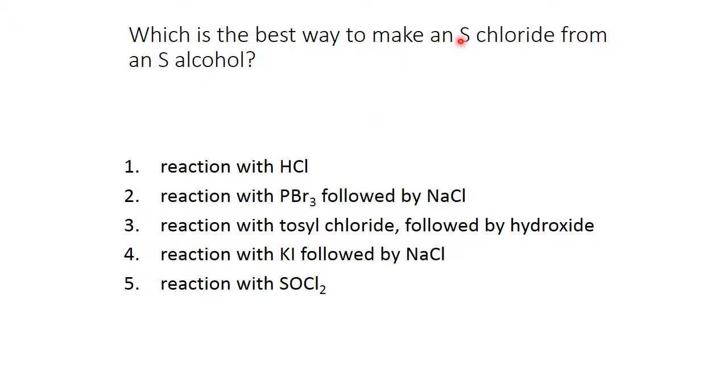Which way is the best way to make an S chloride from an S alcohol? If I look at this, reacting with hydrochloric acid would give me both an S and an R chloride because it would go through a carbocation, a planar carbocation, and you would get racemization. If I react with phosphorus tribromide, I would get the bromide, but it would be the R bromide. If I then use sodium chloride, an SN2 would occur, and that would invert it back to the S. So this is a possibility. Let's look at the rest.